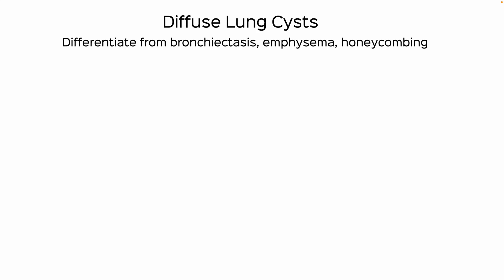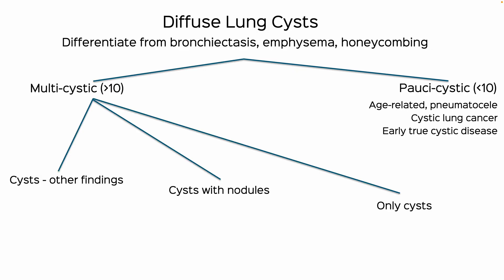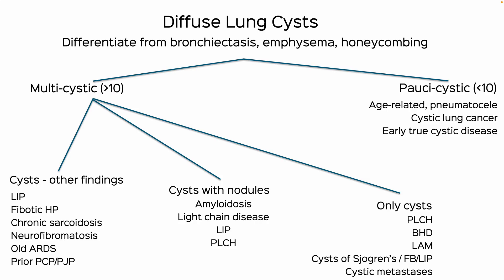So that is the flowchart. When we see diffuse lung cysts, first differentiate from conditions that simulate cysts like bronchiectasis, emphysema, and honeycombing. If cysts are fewer than 10, you can essentially ignore them. If more than 10, determine whether they are cysts only, cysts with nodules, or cysts with other findings, and accordingly try to arrive at a differential. It is not usually possible to reach a diagnosis solely on CT — you need history, earlier scans, and sometimes more information — but this approach allows a reasonably intelligent differential when faced with these conditions.